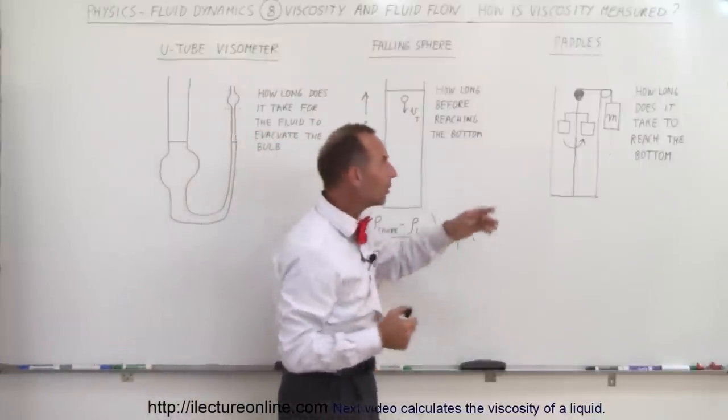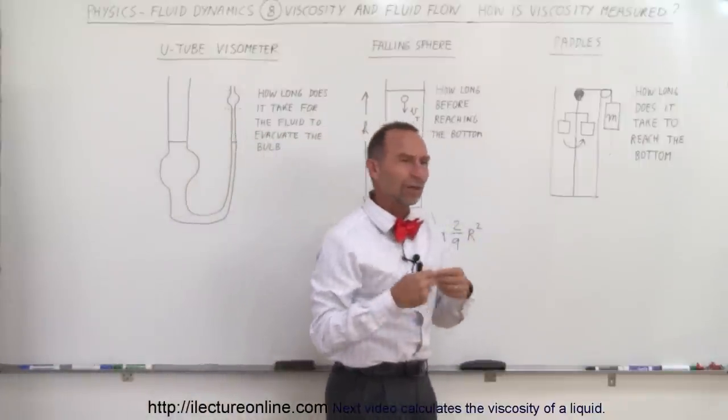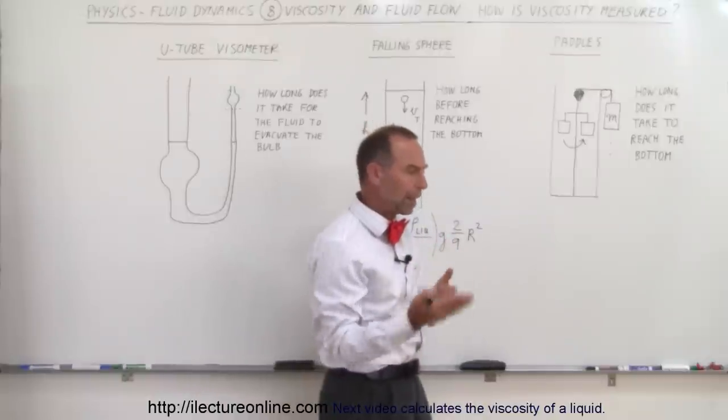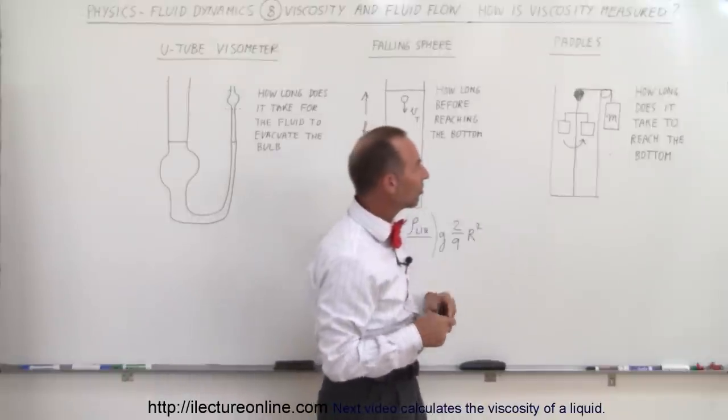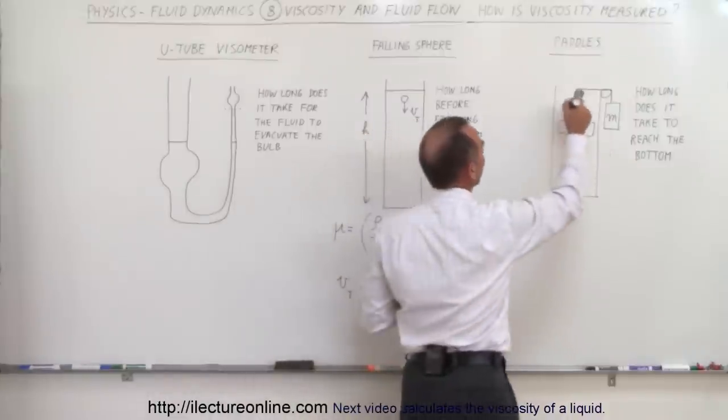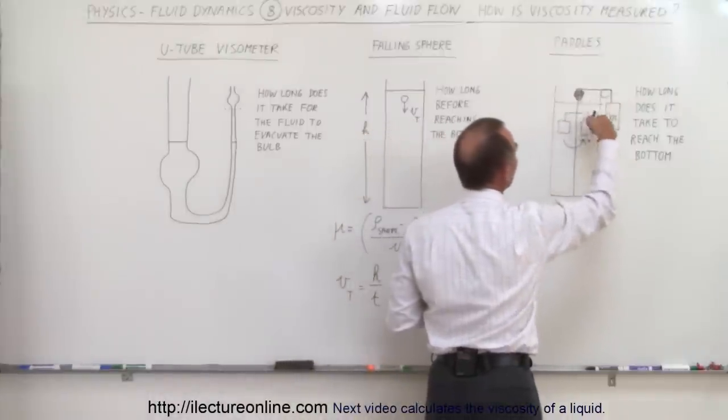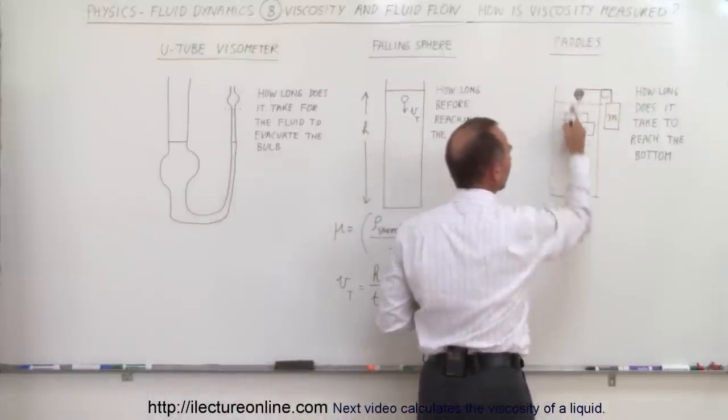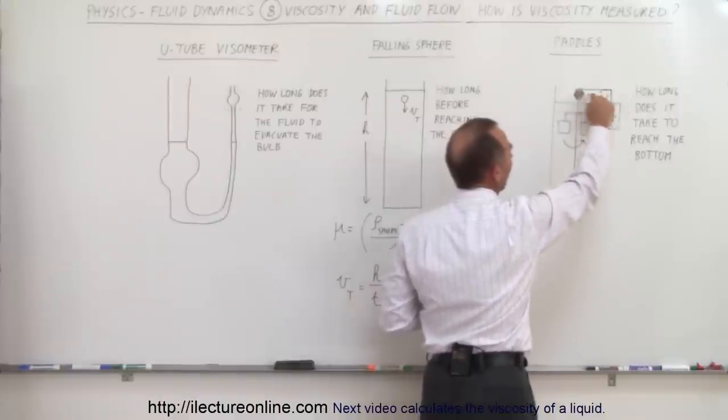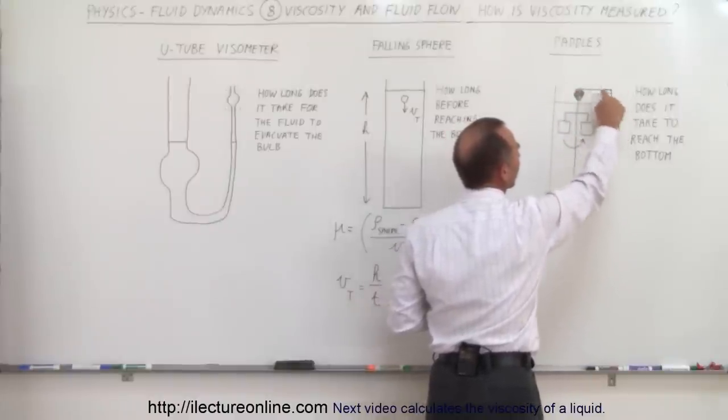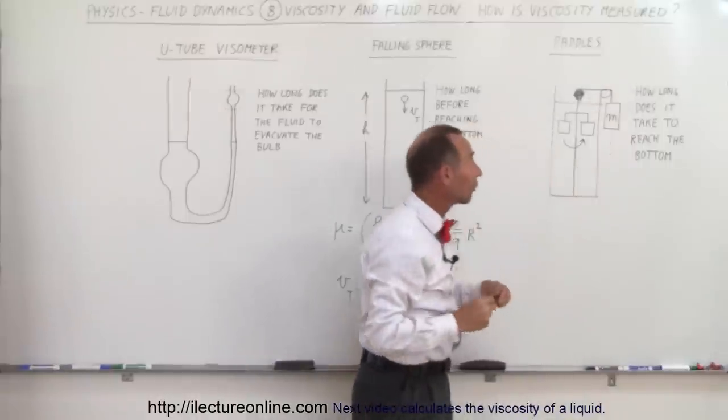Sometimes we also use something like a paddle system, kind of the same kind of system what Joule used to compare work to heat. We can have a system where there'll be a viscous liquid in the container. We have some paddles that connect to a shaft, and the shaft has a string attached to it. That string is attached to a mass that goes over a pulley.